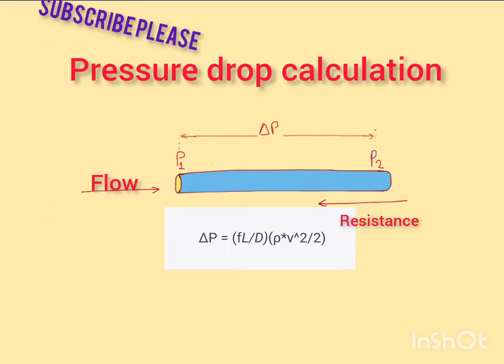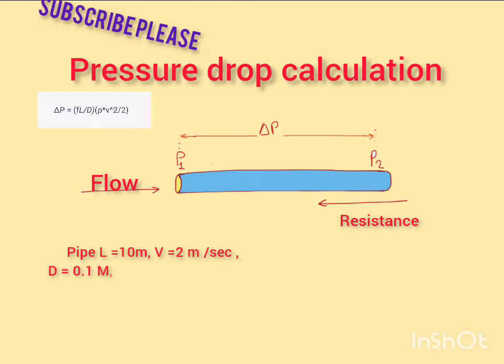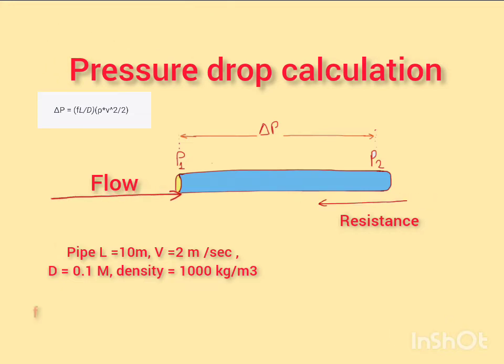Now let's look at an example to better understand how to calculate pressure drop. Suppose we have a 10 meter long pipe with a diameter of 0.1 meters. The fluid flowing through the pipe has a density of 1000 kilograms per cubic meter and a velocity of 2 meters per second. The friction factor is 0.02.